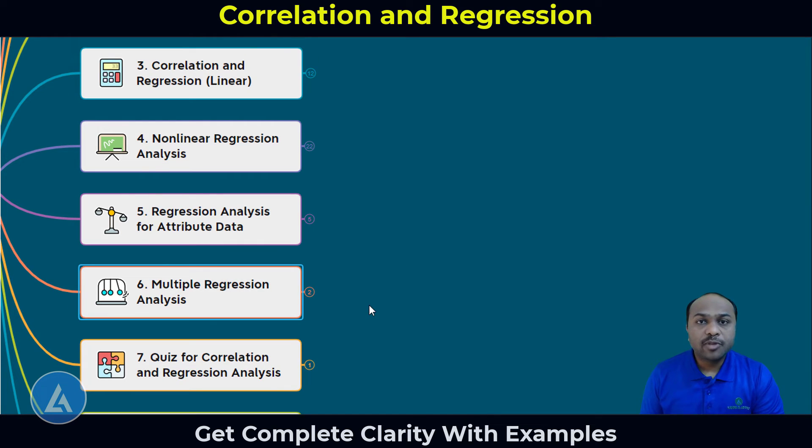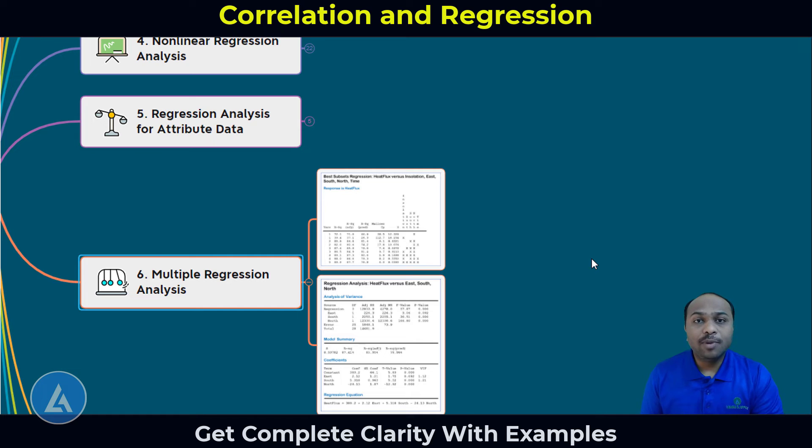In the next section of this course, we are going to understand multiple regression analysis. This is very important when we are having the multiple variables and we want to study the impact of these multiple variables onto our single response or multiple responses. As a first part of it, we are going to understand how to perform the best subset regression with the help of practical example. And by application of this best subset regression, what are the important variables that we got, how to perform the multiple regression analysis on that important variables.